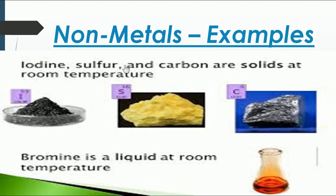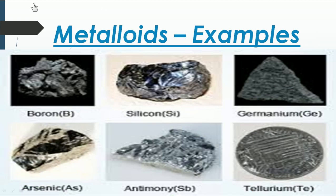The next topic is metalloids. Some examples are boron, silicon, germanium, arsenic, and tellurium. Silicon and germanium are mainly used in circuits — we call them semiconductors.